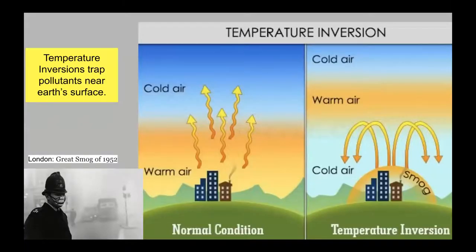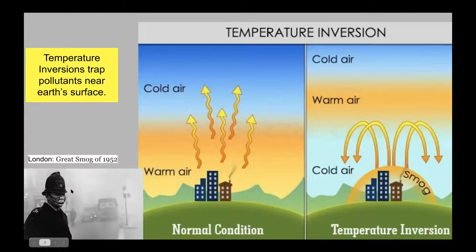Temperature inversion is when pollutants are trapped near the Earth's surface. Under normal conditions, warm air rises and normal winds help spread pollutants. But during a temperature inversion, warm air and pollutants get trapped by a cap, creating smoggy days. In 1952 in London, the Great Smog lasted five days, and scientists estimate that between 4,000 and 12,000 people may have died from bronchitis, pneumonia, and asthma related to it.